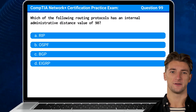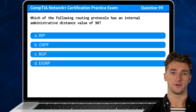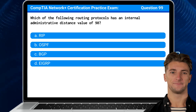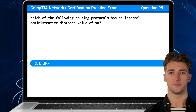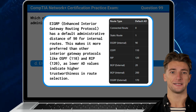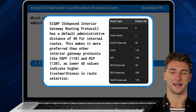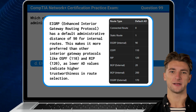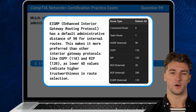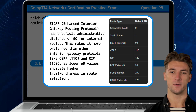Question 99. Which of the following routing protocols has an internal administrative distance value of 90? The answer is D. EIGRP. EIGRP or Enhanced Interior Gateway Routing Protocol has a default administrative distance of 90 for internal routes. This makes it more preferred than other interior gateway protocols like OSPF and RIP, as lower AD values indicate higher trustworthiness in route selection.